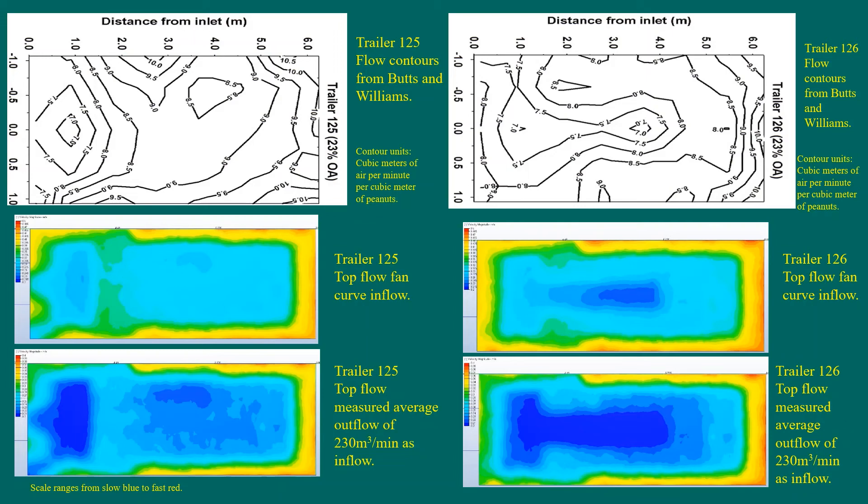The model with the fan curve inlet flow produces higher flow rates than reported, but that could be due to the model having no allowance for the leaks in the trailers. When the model inlet flow is set to the actual measured outlet flow, the flow numbers are closer.